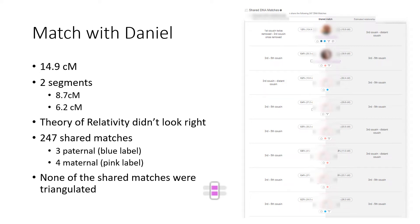Both segments are down in that range of possibly being a false segment. I looked at his shared match list and he had 247 shared matches. In the first few of them, only three were paternal and four were maternal, which indicated to me that this match wasn't obviously maternal or paternal — it seemed a little fishy. As I scrolled through all 247 shared matches, none of them had the triangulation symbol — the purple symbol shown here — so none were listed as being triangulated, which also suggested this might be a false match.